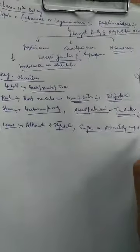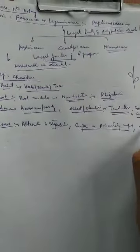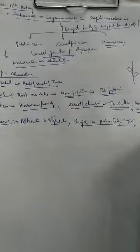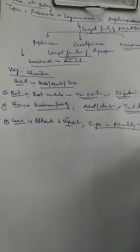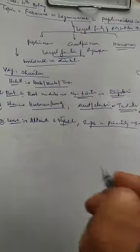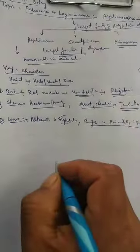As far as venation is concerned, like all other dicots, venation in this family is reticulate.